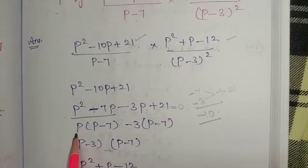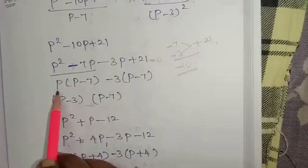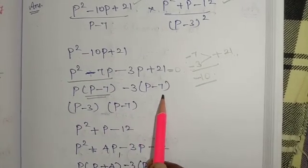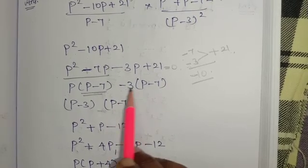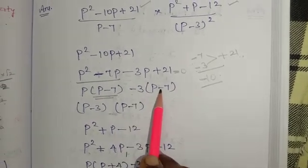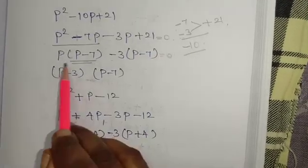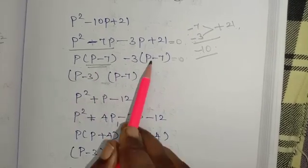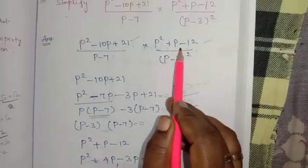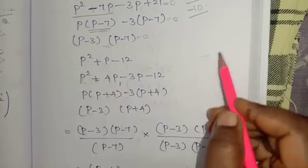p is common. p into p minus 7. p into p, p squared. p into minus 7, minus 7p. Minus 3 is common. Minus 3 into p minus 7. Minus into minus plus 3. 7s are 21, is equal to 0.